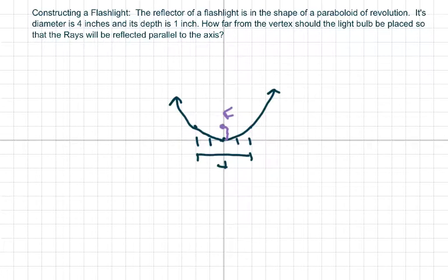So it has the form of x squared equals 4ay, and these points lie on the parabola, which is (2,1) and (-2,1). You just pick one of the points, so we get 2 squared equals 4a.